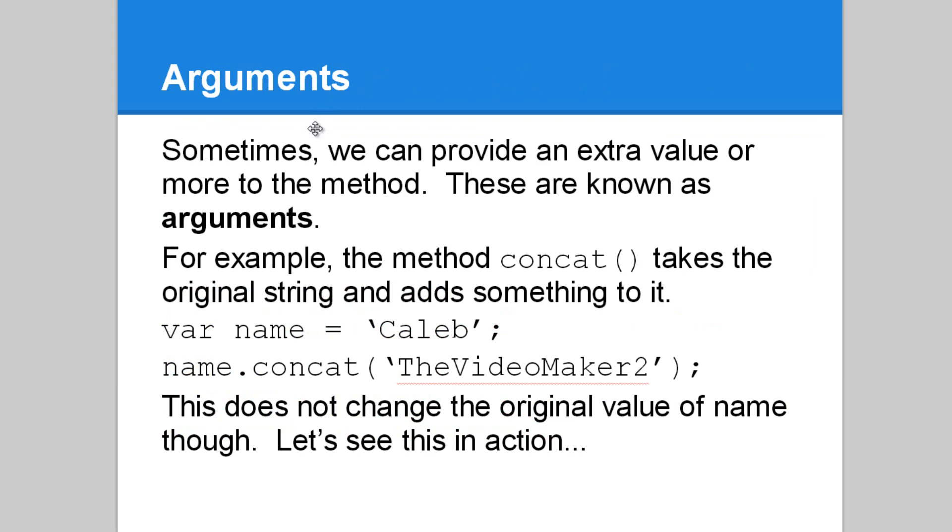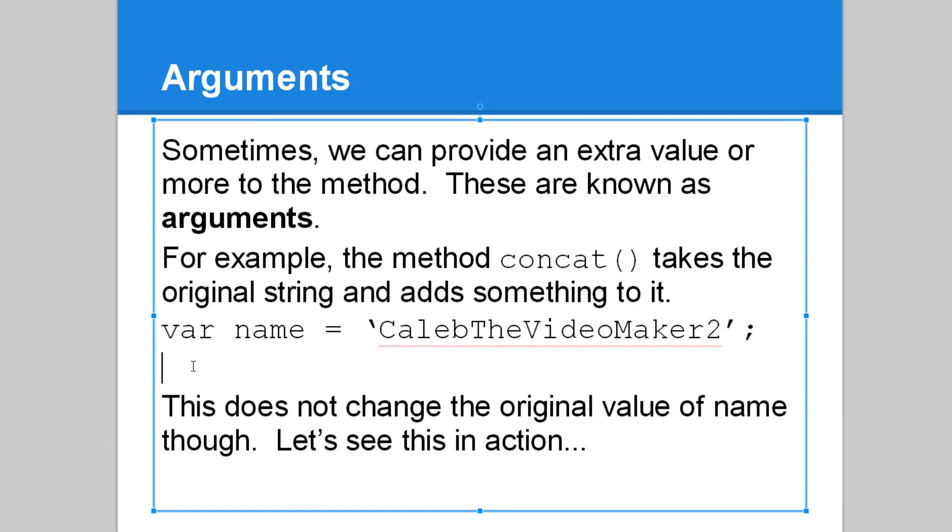Some methods have what's known as an argument. Sometimes we can provide an extra value or more to the method. These are known as arguments. They go within these parentheses. For example, the method concat takes the original string and adds something to it. So we have the name Caleb. We can use the method concat, and we can add on the string the videomaker2. But this does not change the original value of name, though.